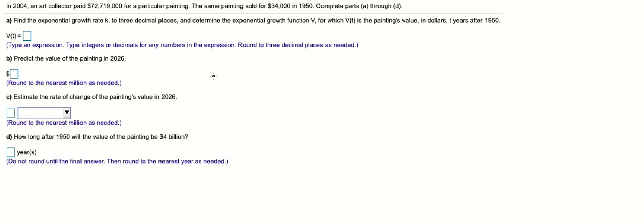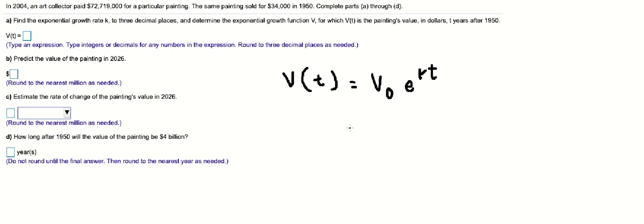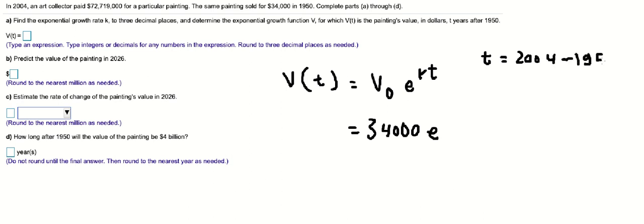Hello everybody, today I want to show you how to answer this one using the exponential growth formula. In 1950 the price was about $34,000, so we put this number in here. From 1950 to 2004 is about 54 years, and the price in 2004 we have that number as well.